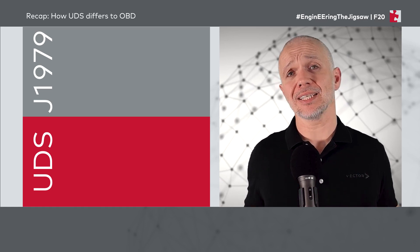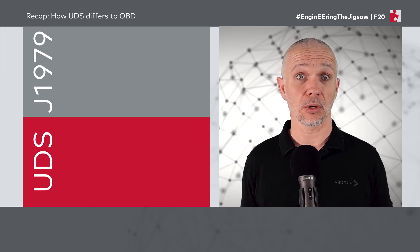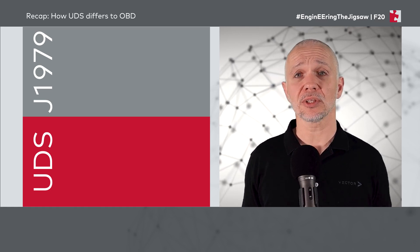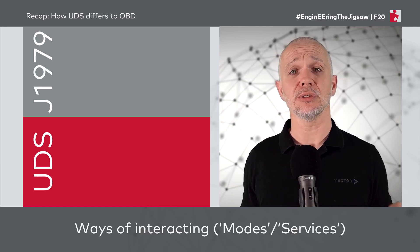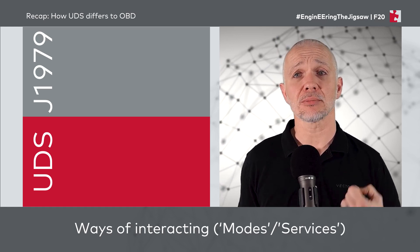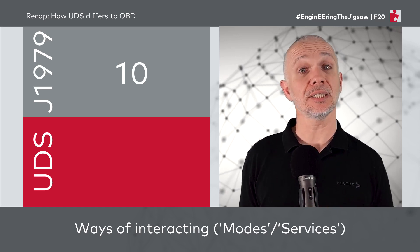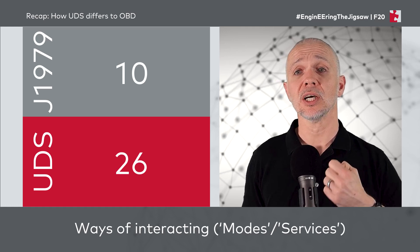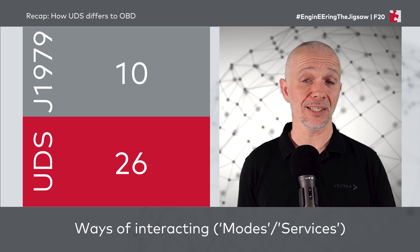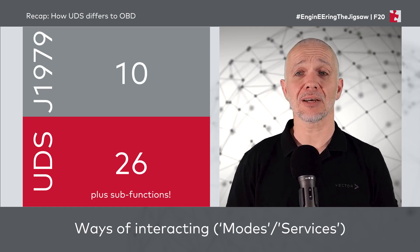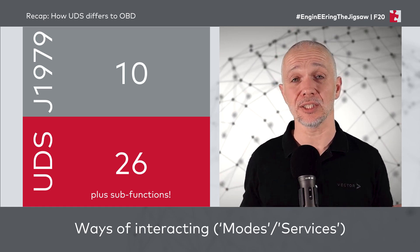There are some quite big differences between J1979 and UDS — 15 years is quite a long time in terms of technical development. J1979 provides 10 modes or services, whereas UDS, at least the third edition published in 2020, has 26 services — a lot more than 10. And a number of those services have sub-functions, effectively subdividing them further and giving us even more ways to interact with the ECUs in a vehicle.